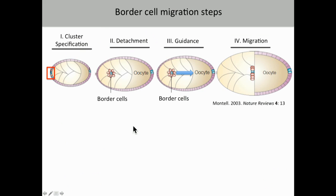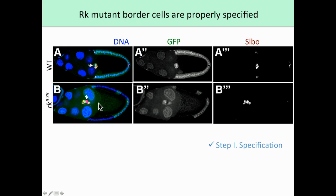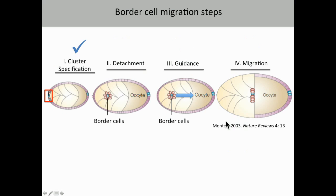The first step of border cell migration is specification of the border cells, so I was curious whether RICKETS mutant border cells were specified appropriately. I looked at the border cell specification marker SLOBO. This wild-type border cell cluster shows all border cells normally express SLOBO. In a cluster with two RICKETS mutant cells lacking GFP, those cells still express SLOBO, indicating specification is occurring normally. I was then interested in whether RICKETS was affecting detachment of the border cell cluster or guidance to the oocyte.